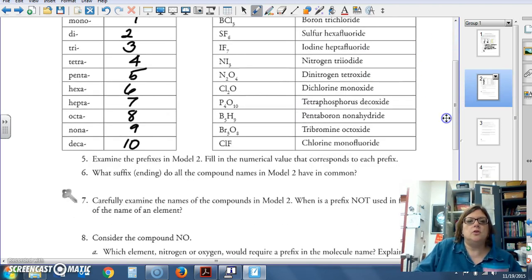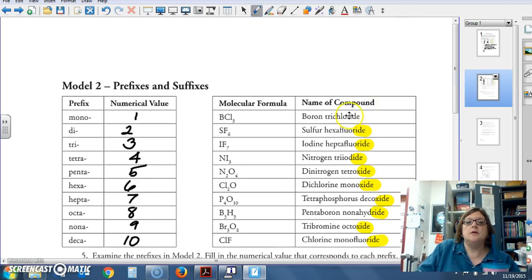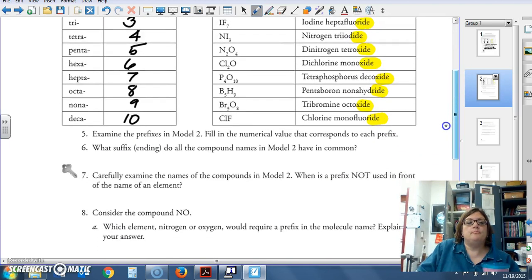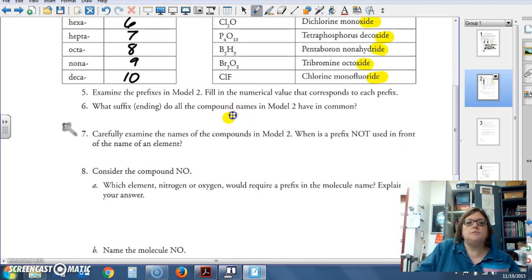Now, take a moment to look over the rest of this model. What suffix do all the compounds in model two have in common? So, what we're asking now is, what suffix is this? Seen that one before? Ide, right? Yes, we know Ide. Ide is the end of the other binary compounds, not with polyatomic ions.